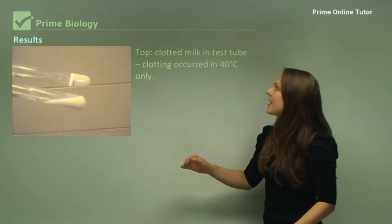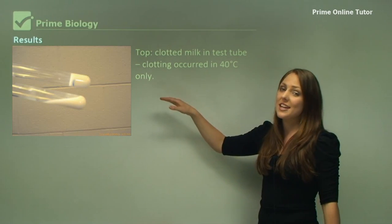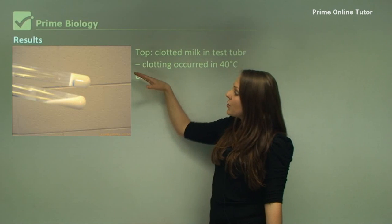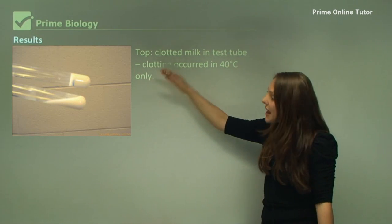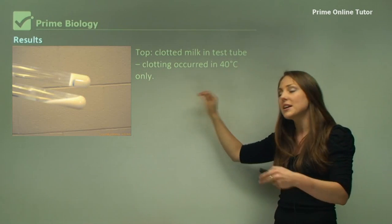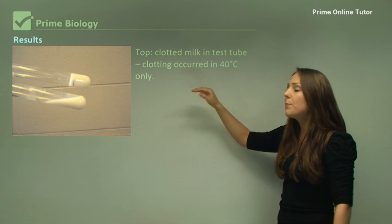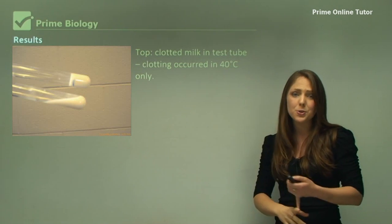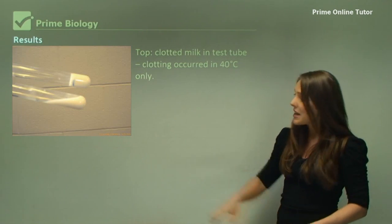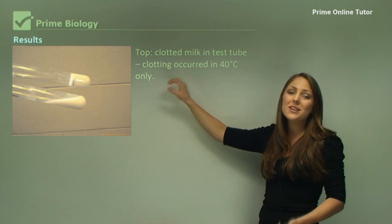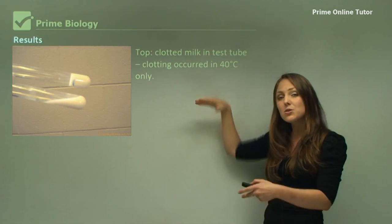We can see here that at 40 degrees you can see that the top test tube has clotted and the bottom test tube, the milk is still quite liquidy. The bottom test tube has either come from a zero degrees or 80 degrees environment, but the top test tube, the milk is a hundred percent clotted. It is not liquid at all and this has happened in the 40 degrees water bath.